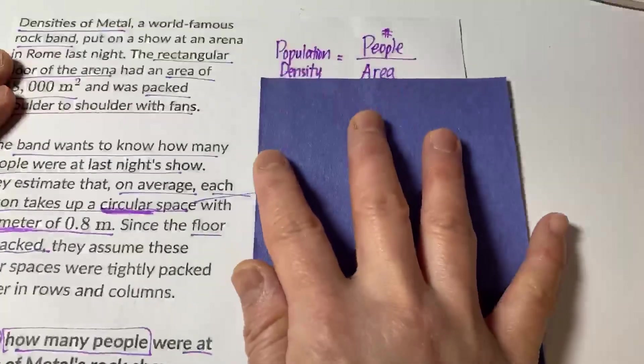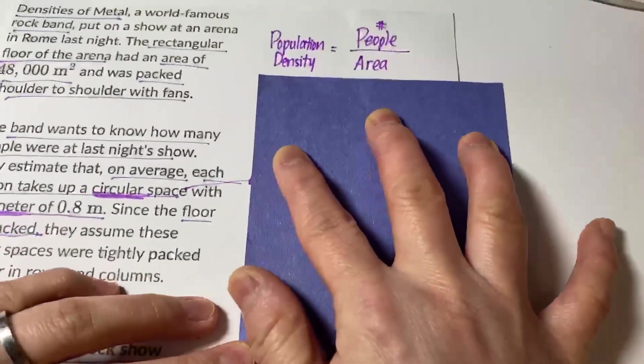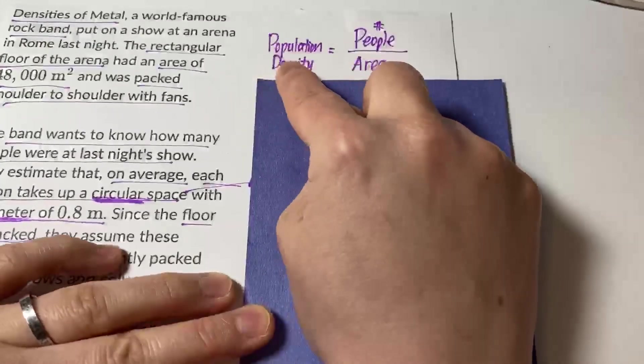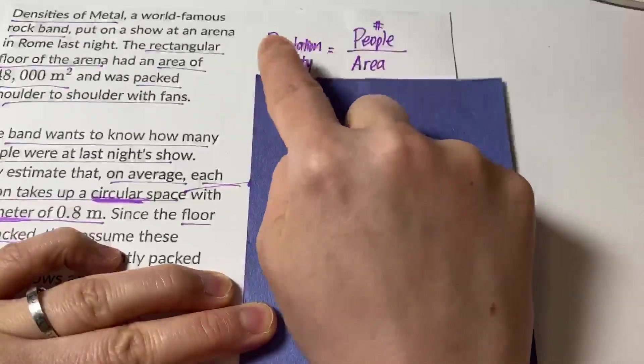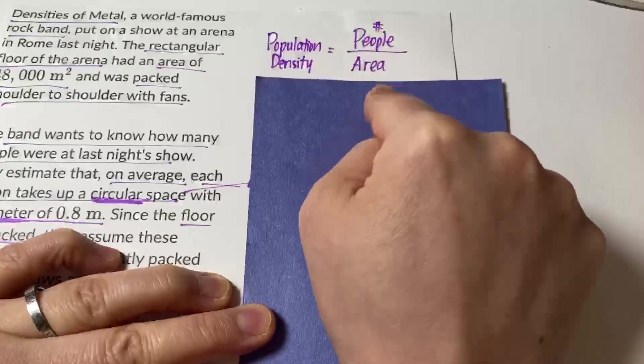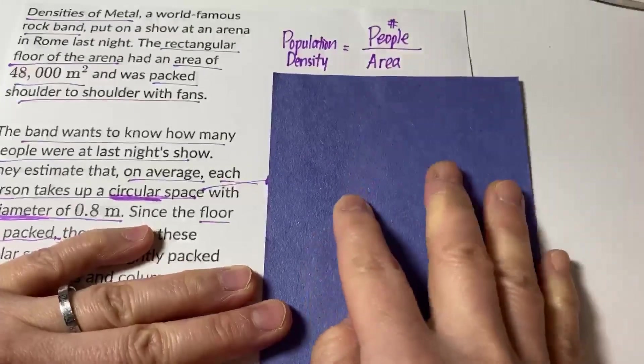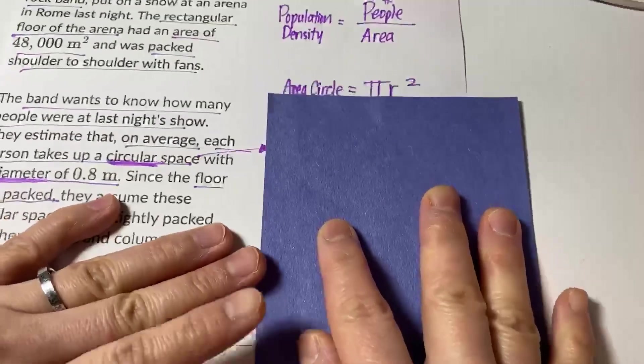So just like the other density question we went over in the other video, you need to remember this formula: population density is the number of people over area.